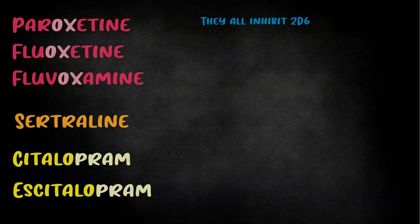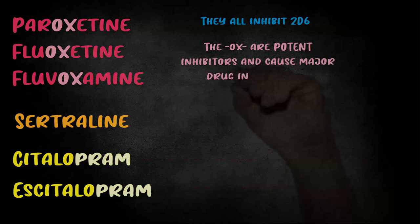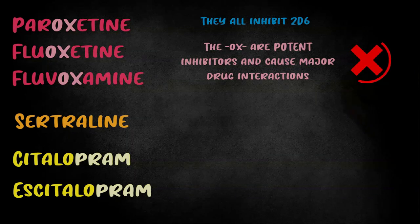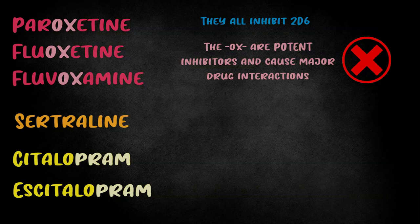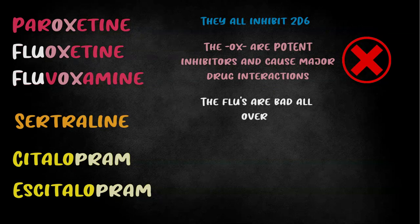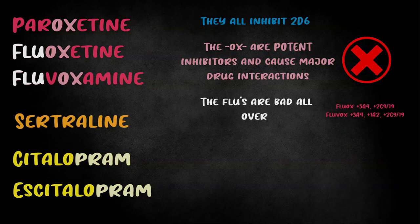Fact two: the oxes are potent inhibitors and cause major drug interactions. I find this easy to remember because there's an X in the oxes — like a big warning X. The oxes are not drugs you can mess around with when it comes to drug-drug interactions; they will cause potentially clinically dangerous interactions. Fact three: the flus are bad all over. Fluoxetine and fluvoxamine — you already know they cause major interactions from fact two — but it's not just 2D6. The flus also hit CYP 3A4.